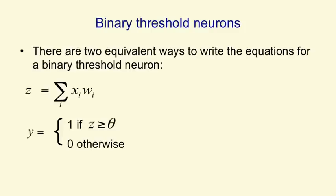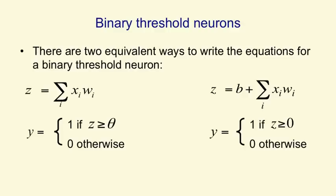Alternatively, we could say that the total input includes a bias term, so the total input is what comes in on the input lines times the weights, plus this bias term, and then we can say that the output is 1 if that total input is above 0, and is 0 otherwise. And the equivalence is simply that the threshold in the first formulation is equal to the negative of the bias in the second formulation.